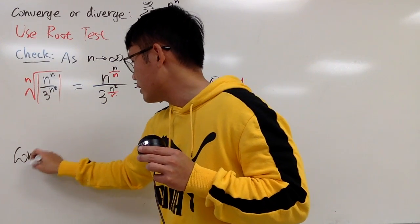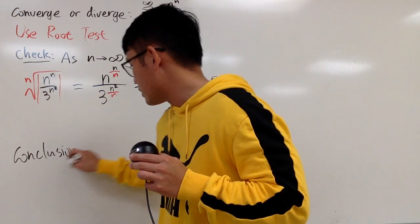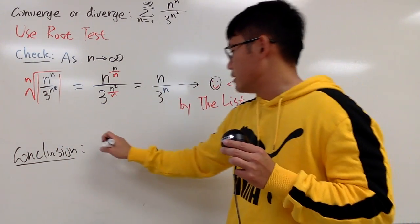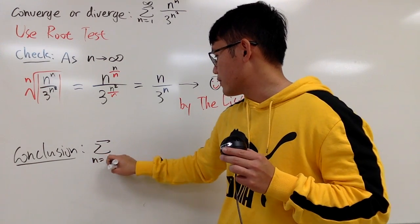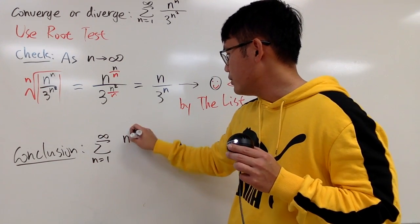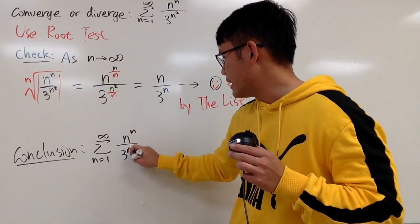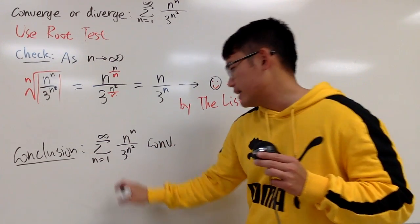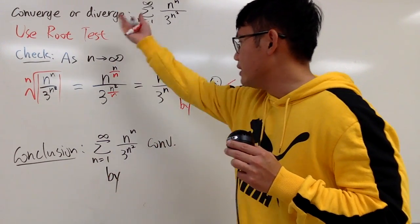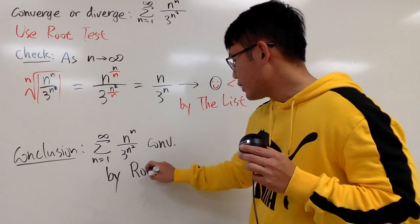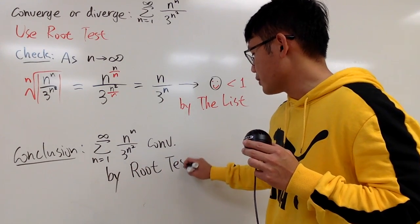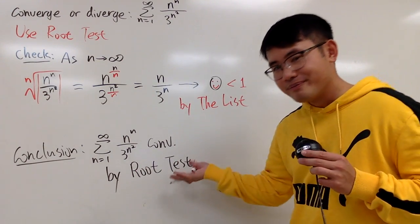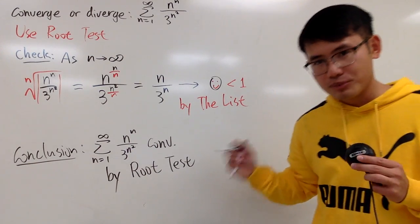So you can just draw the conclusion right here. Let me just write it down. Conclusion. And this series, as n goes from 1 to infinity of n^n over 3^(n^2), this right here converges. Let me just write down by the root test. And do not write down RT, because RT could also be like ratio test. So, root test. Spell it out. Don't be lazy. That's it.